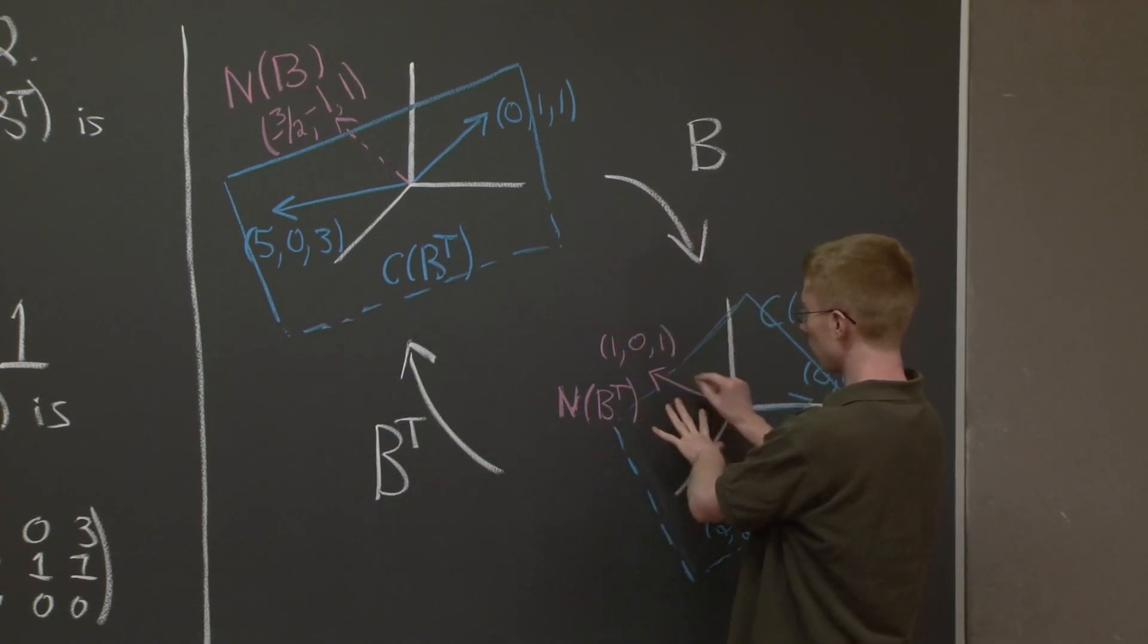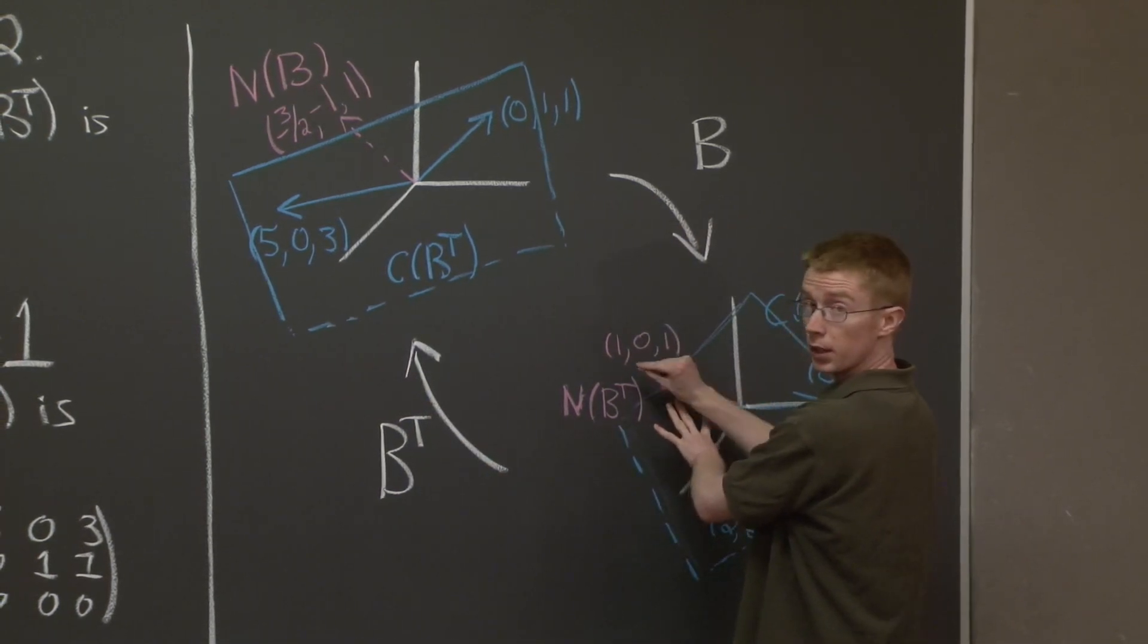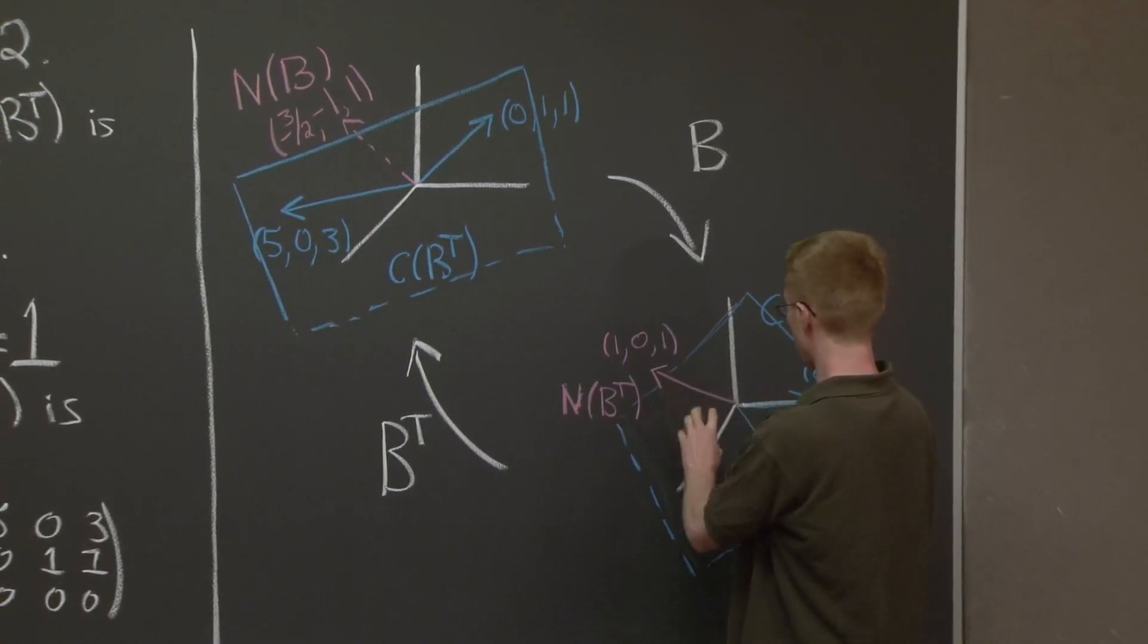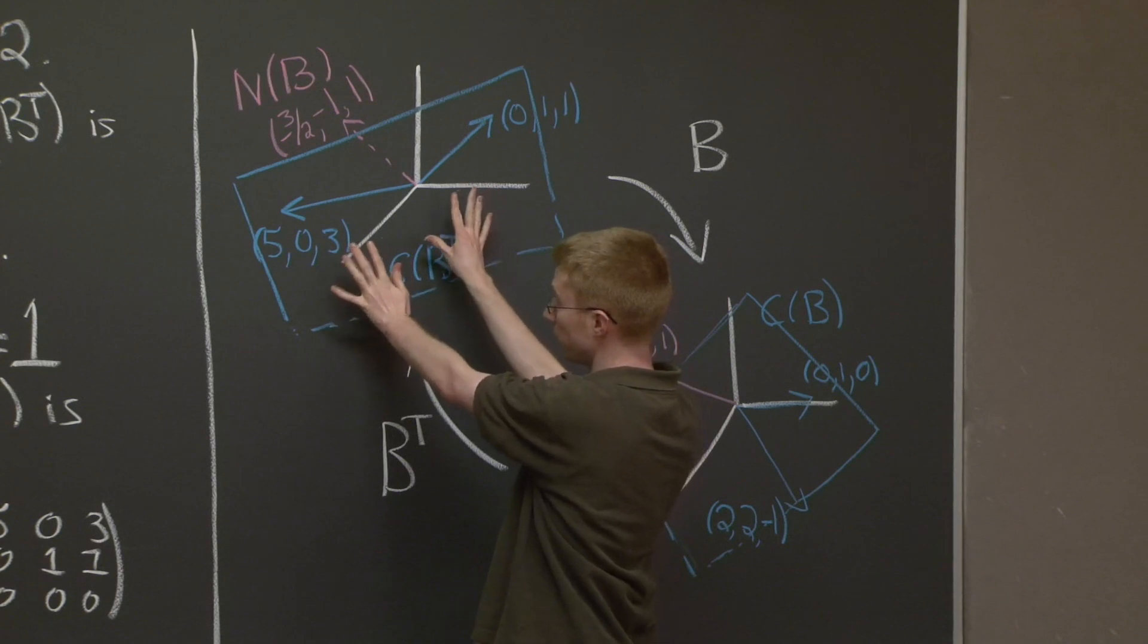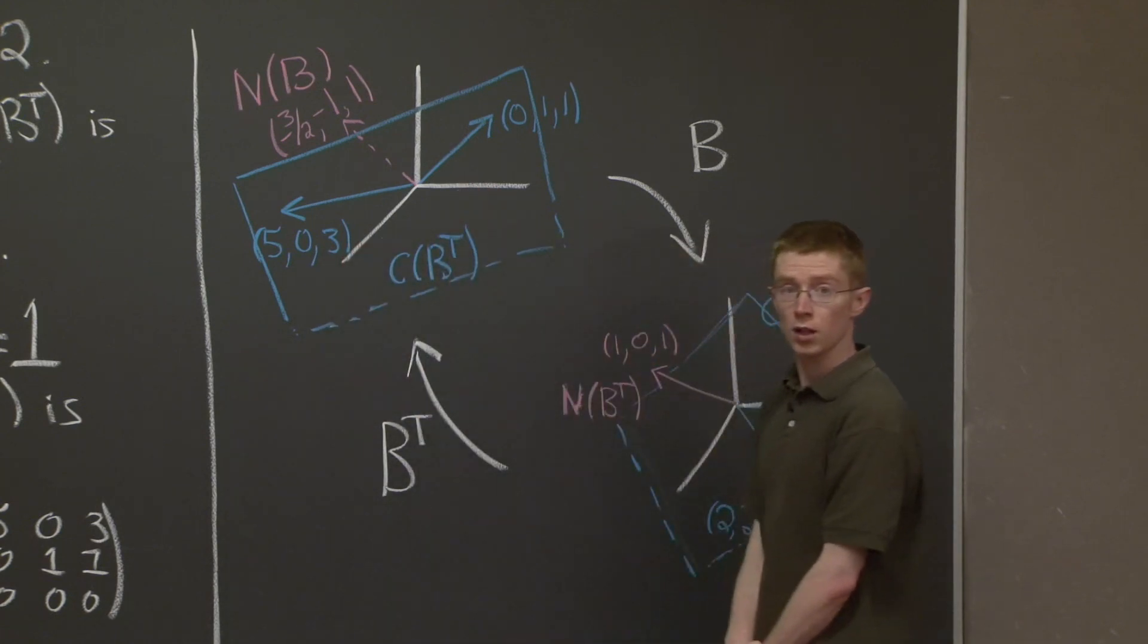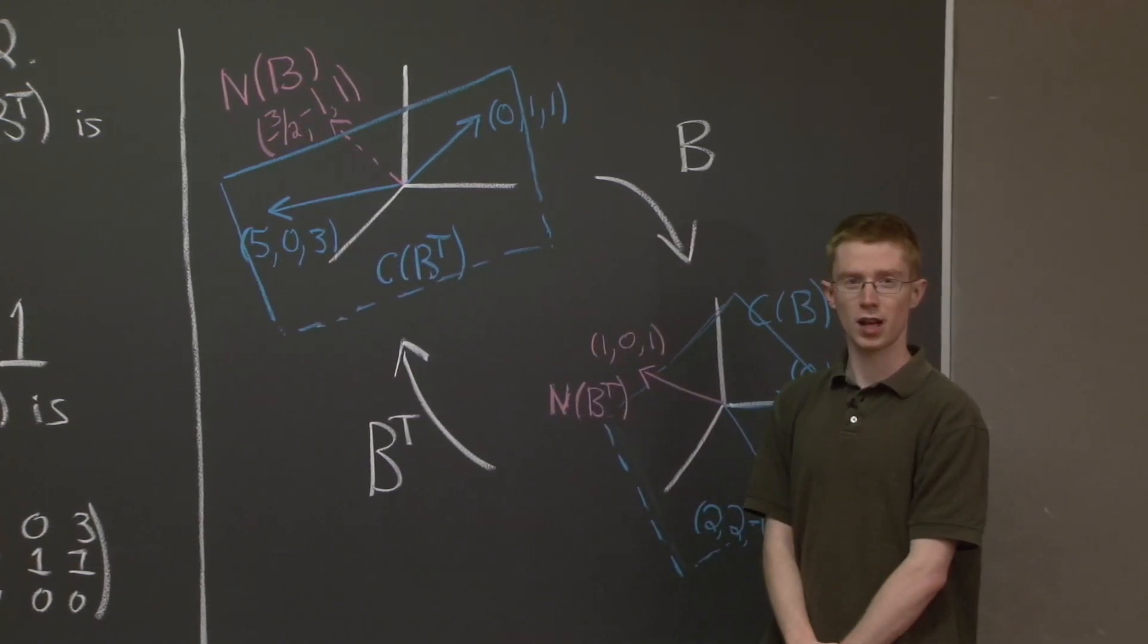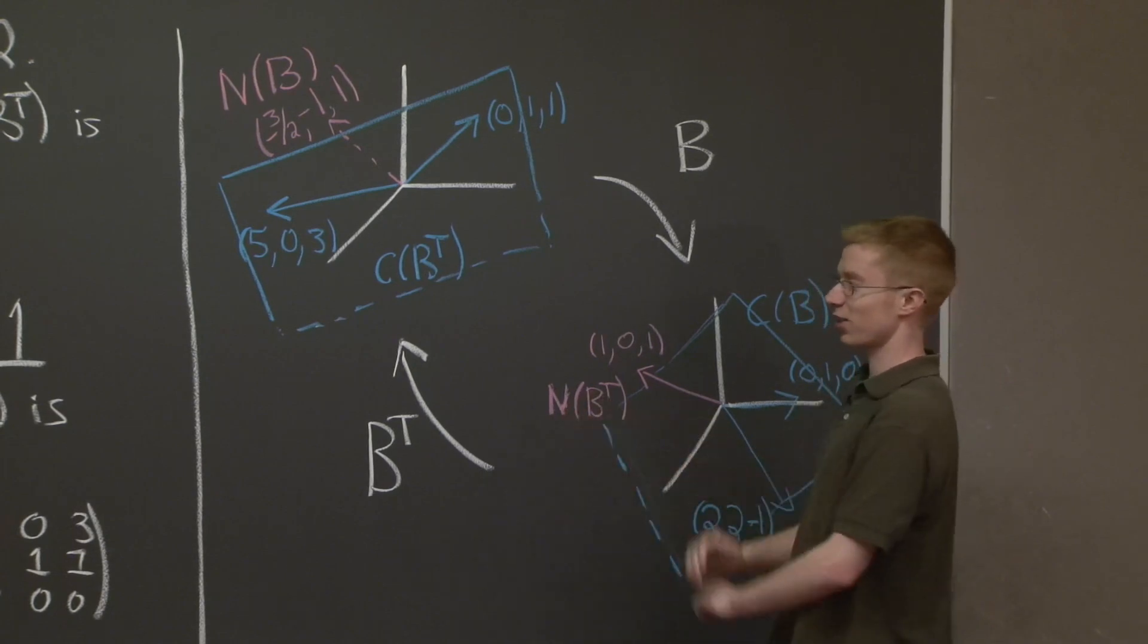Well, B transpose kills this left null space, kills this vector, and it takes everything else into the row space, into the column space of B transpose. Thanks for doing this exercise together. I hope this picture is helpful.